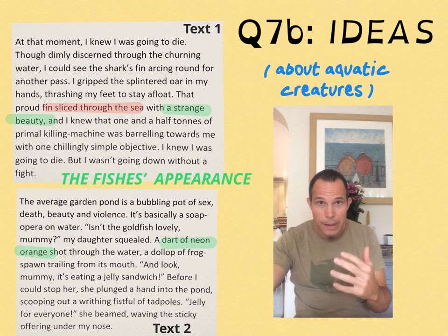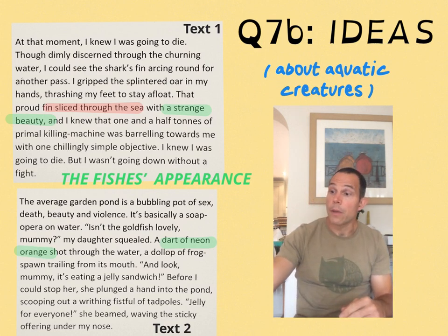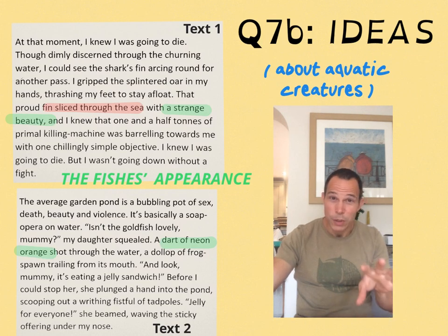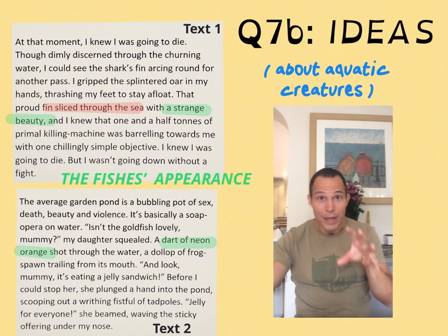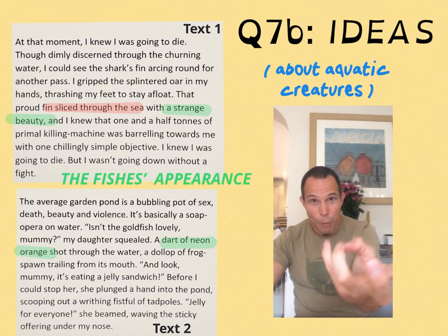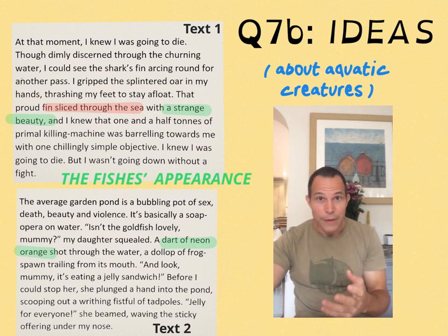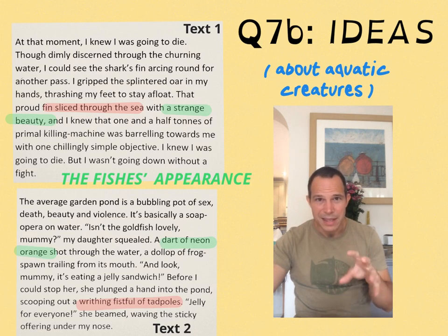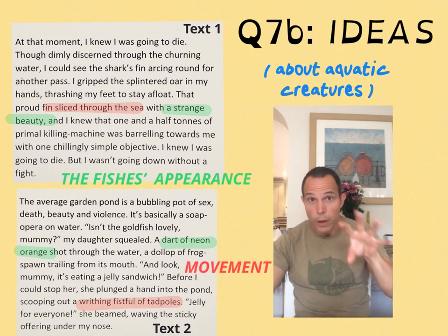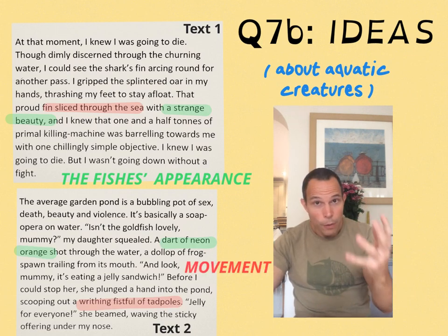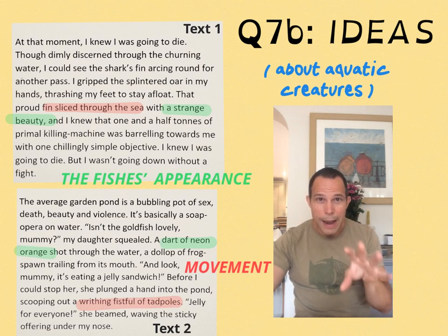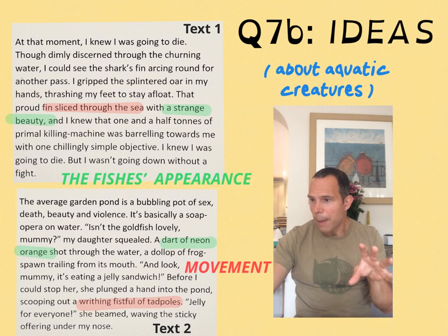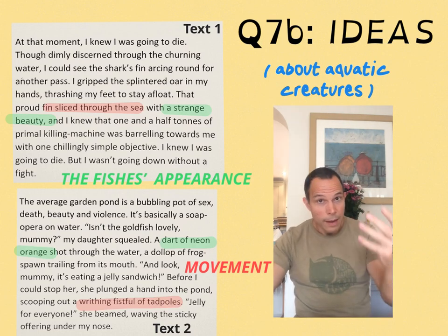You've also got the shark's fin 'slicing through the water' — that's movement. Is there anything that parallels that in Text Two? You've got 'a writhing fistful of tadpoles' — there's an image to put you off your Weetabix — however, 'writhing' is movement, 'slices' is movement. Bing — connection! We've got another fruitful link to forge.